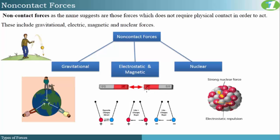Magnetic forces originate from magnets. Like poles repel — a north pole to a north pole gives a repulsive magnetic force, whereas a north pole to a south pole gives an attractive magnetic force. Nuclear force is the force that exists between molecules in an atom — the intermolecular forces in the nucleus of an atom give us the nuclear force.